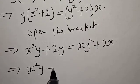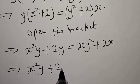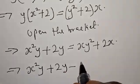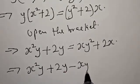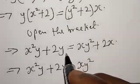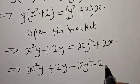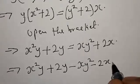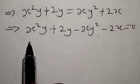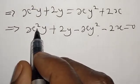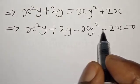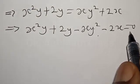Now let's equate everything to zero. This implies we have x squared y plus 2y, and if this crosses to the other side it will be minus xy squared, and this plus 2x becomes minus 2x, equal to zero. So from here we have x squared y plus 2y minus xy squared minus 2x equals zero.